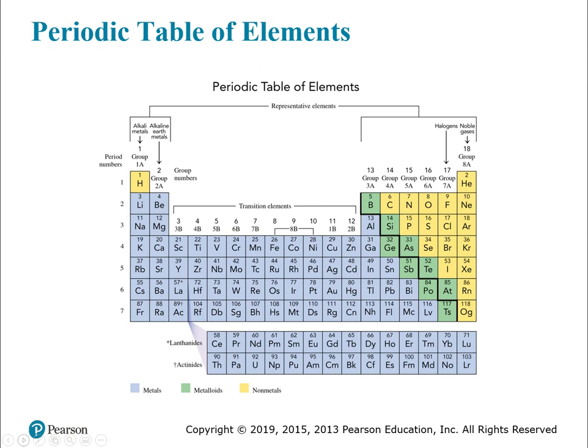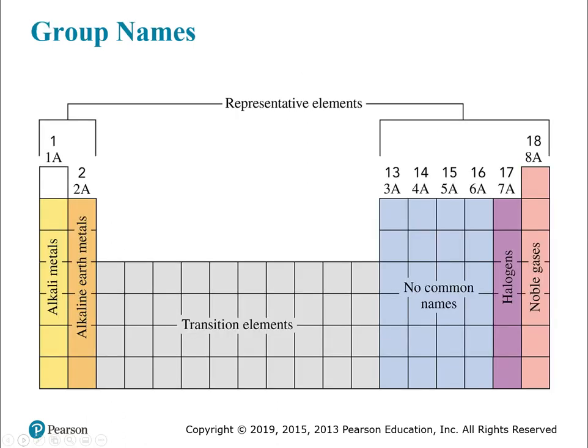This is a periodic table — it's got a lot of information on it. You see these different common names, the period numbers, and color coding for metals, metalloids, and non-metals. We're going to go through and break down what some of these terms mean, and I'll let you know what you need to know for your exam and moving forward. The first thing we're going to go over is the group names — this slide summarizes all the group names and it's a good one to have for your notebook.